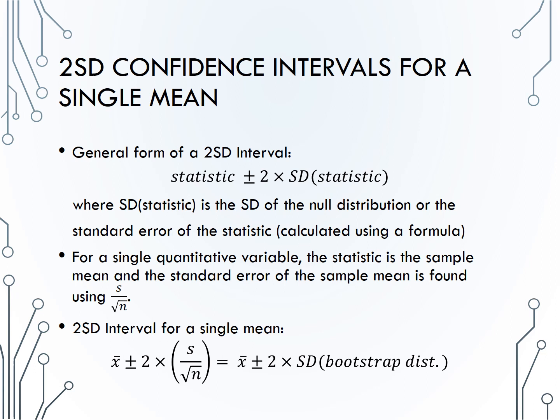Recall that the null distribution for a single mean was simulated by first shifting the data, then bootstrapping or sampling with replacement from the shifted data, and that the shift did not impact the standard deviation of the sample and therefore would not impact the standard deviation of the null distribution. That means technically we can simply bootstrap the original sample to get an estimate of the standard deviation of the sample statistics, meaning no shift in the data is needed.